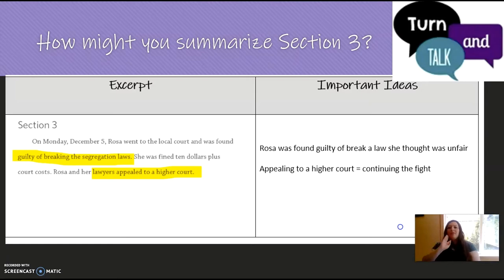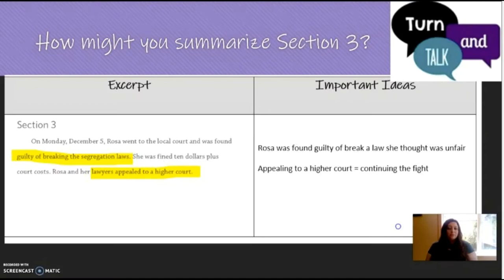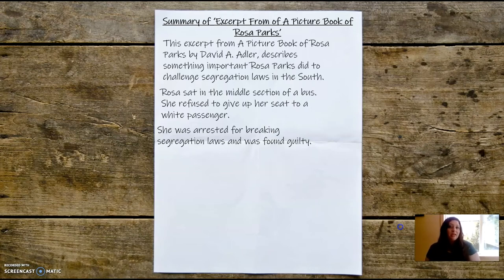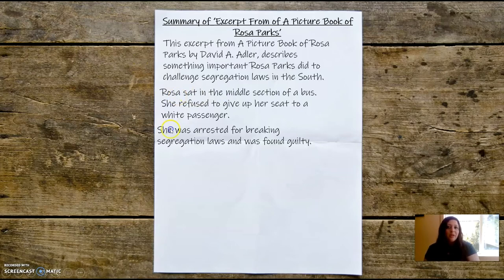Let's look at section number three. I'll give you a minute to take a look. How might you summarize section three? You can pause the video — this is an opportunity for a turn and talk with your partner. So I'm going to say: 'She was arrested for breaking segregation laws and was found guilty.' I add that right into my summary. I now have my first paragraph with the basics of the book, the combined section one and two, and the important ideas for section three.